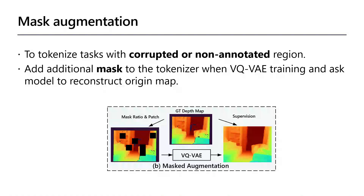Some tasks have corrupted or non-annotated regions — for example, depth estimation and keypoint detection. We present mask augmentation in the training of VQVAE to alleviate this challenge. Specifically, for depth estimation, we randomly mask some regions in the input depth images and then use their original depth information as supervision. In this way, the VQVAE can complete and recover corrupted regions with reasonable results.